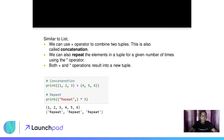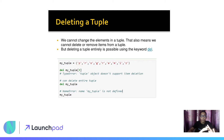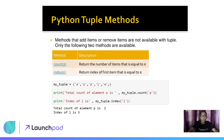Similar to lists, we can use the plus operator for concatenation — to combine two tuples. To repeat elements we use the asterisk operator — that is repetition. Both operations result in a new tuple. When deleting, we cannot remove individual elements from a tuple, but we can delete the entire tuple using the 'del' keyword.